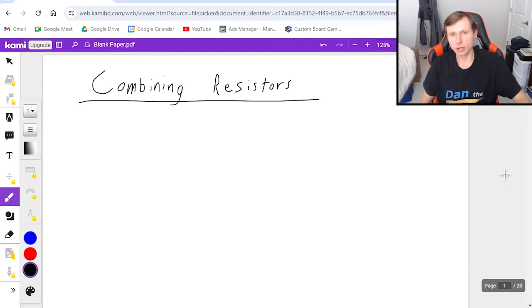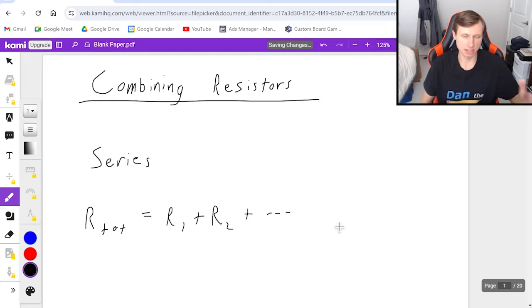So before we get started, just a couple reminders. If you have resistors that are in series, then that means the total resistance is simply R1 plus R2 plus however many resistors you have in series, if you have more than two.